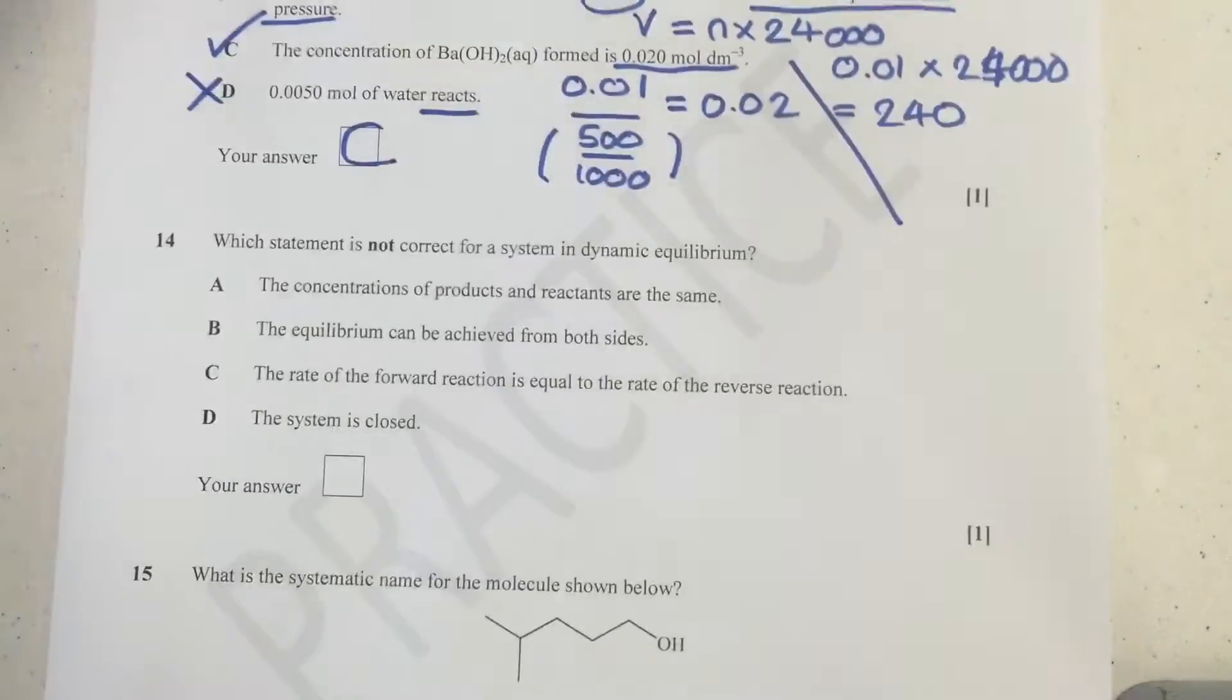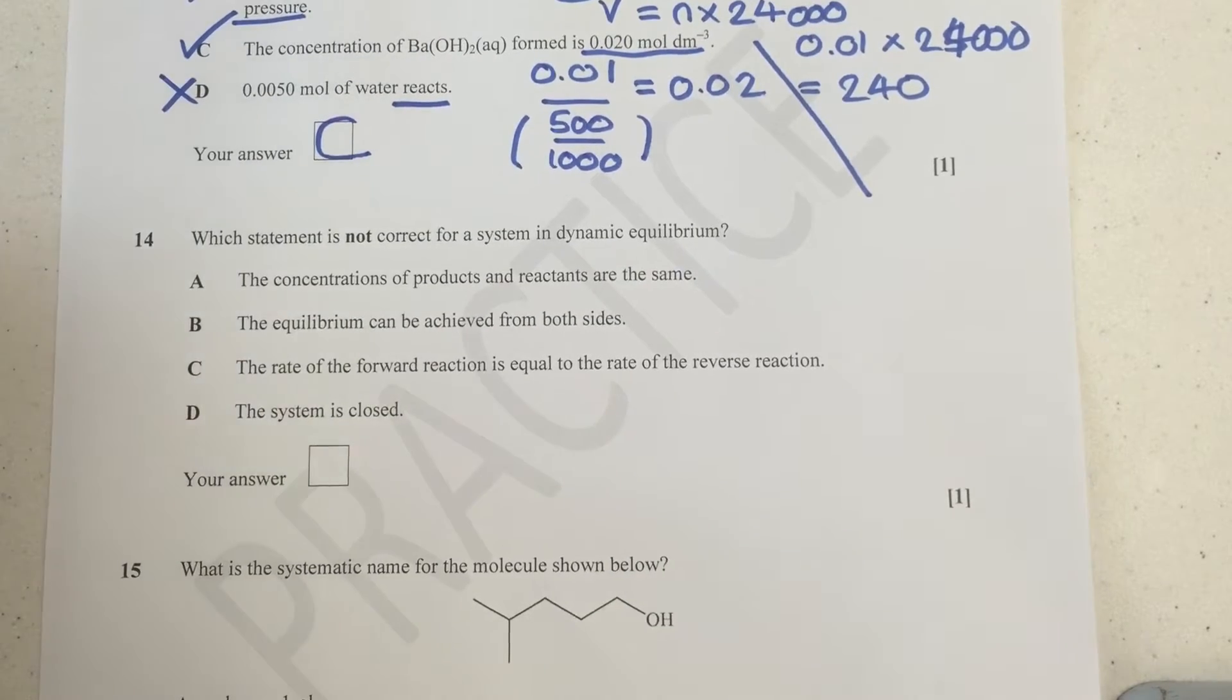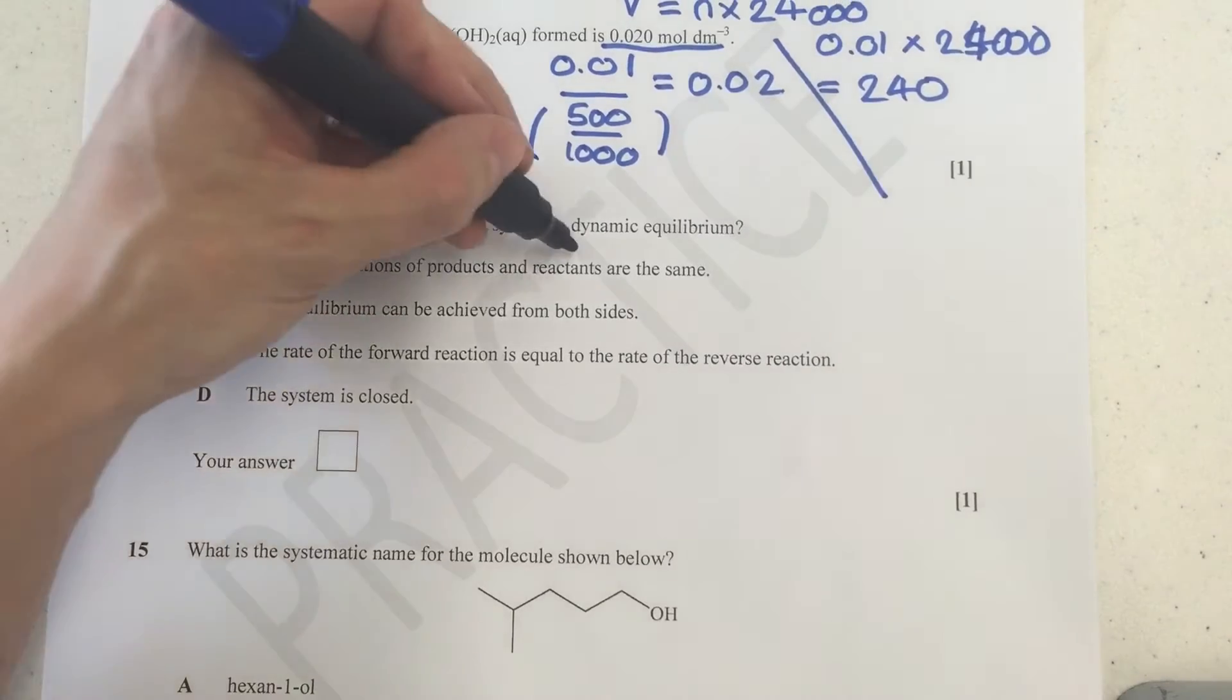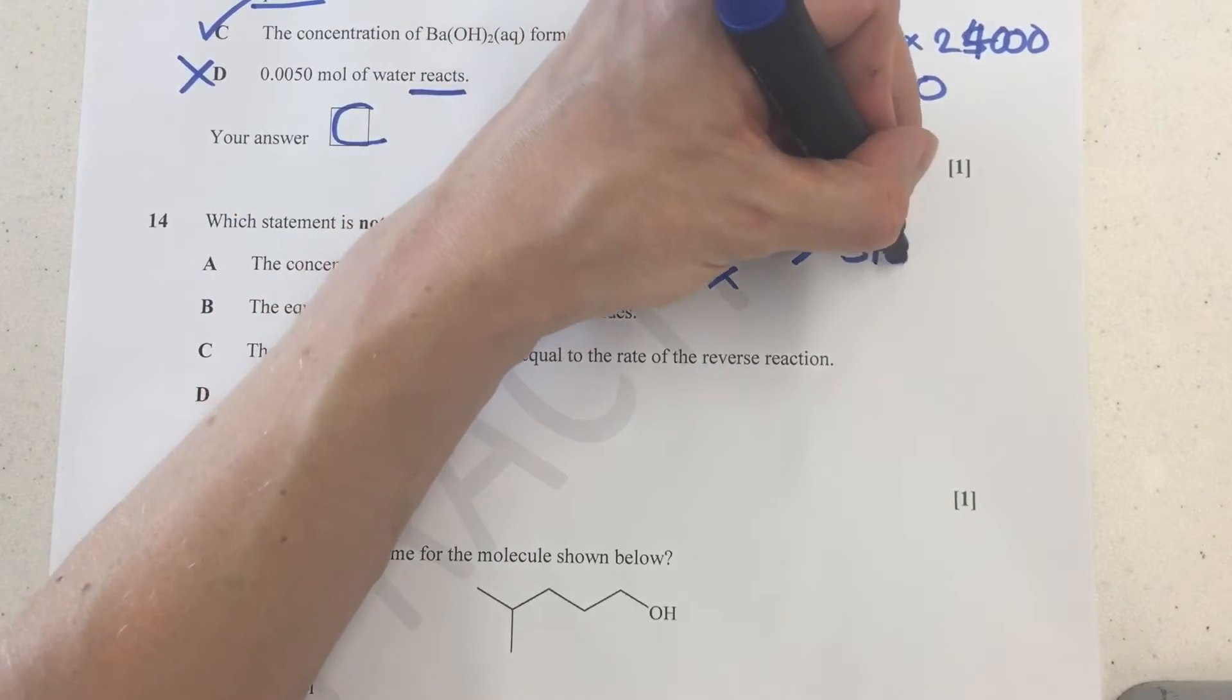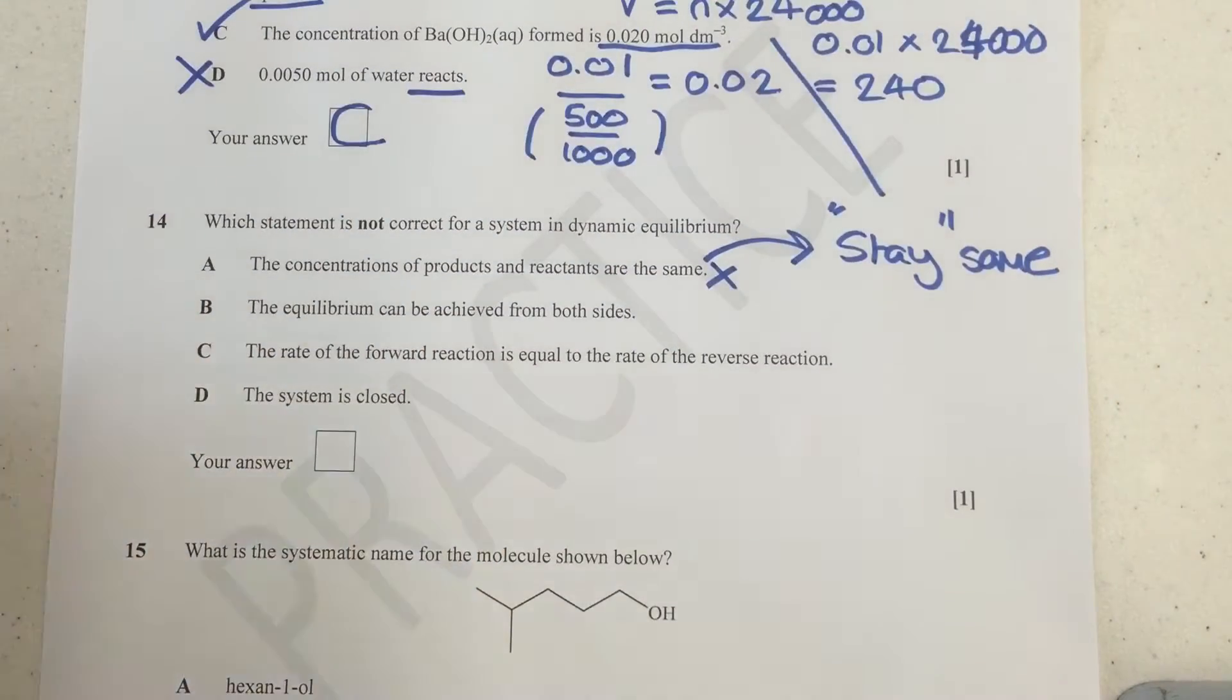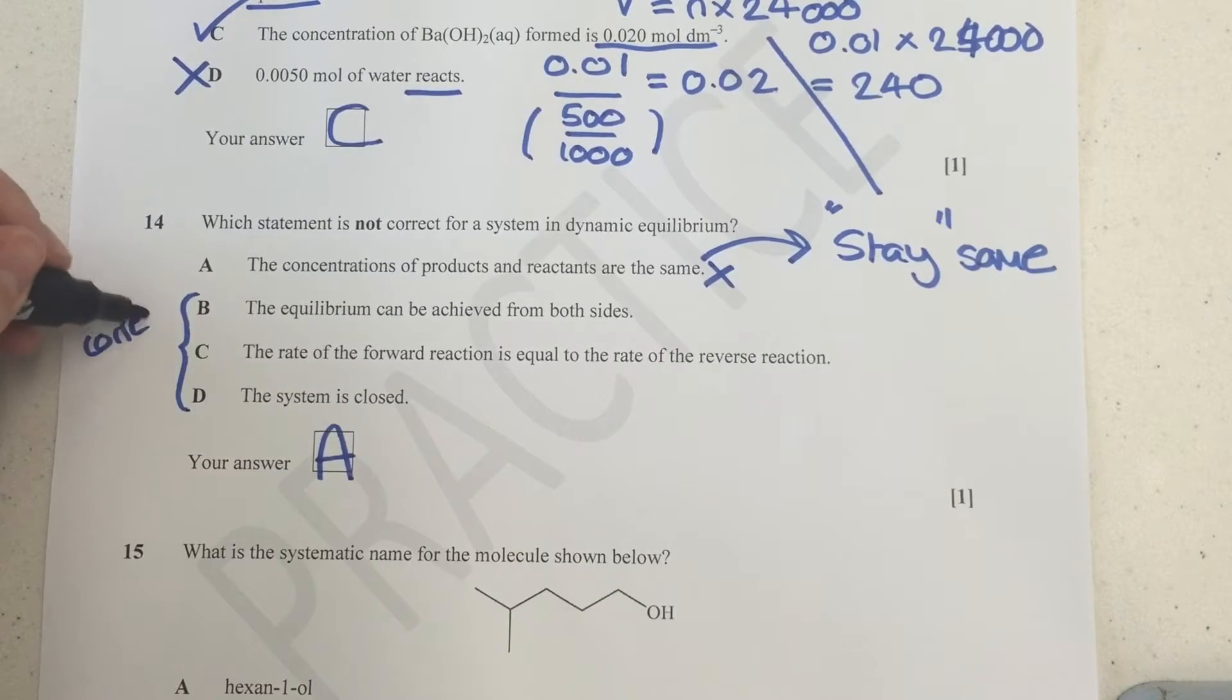Next one then, moving down. So this is on to question 14. Which statement is not correct for a system in dynamic equilibrium? Now what that means is, once again, three of these are correct. Now straight away, we're going to get this one pretty quickly. The concentrations of products and reactants are the same. This is actually not a correct statement because we would say they stay the same. So they stay at constant levels, but they aren't the same as each other. So at the moment, that actually is the incorrect statement. So I'm going to put A in here.